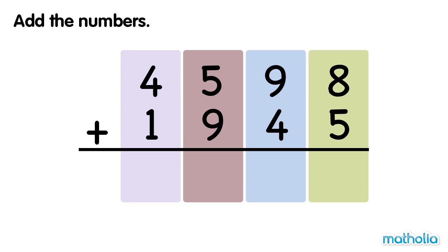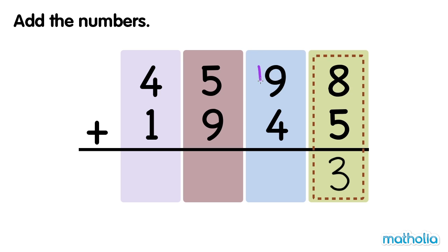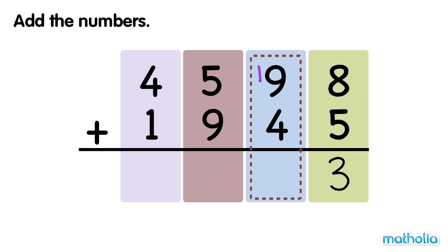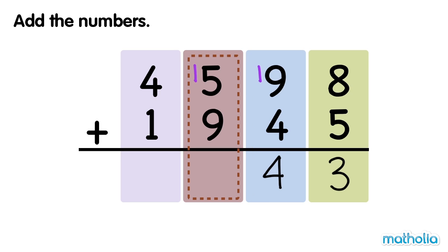Add the numbers. Let's find 4,598 plus 1,945. Add the ones: 8 ones plus 5 ones equals 13 ones. Regroup 13 ones into 3 ones and 1 ten. Add the tens: 1 ten plus 9 tens plus 4 tens equals 14 tens. Regroup 14 tens into 4 tens and 1 hundred.